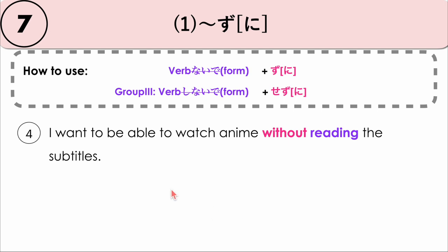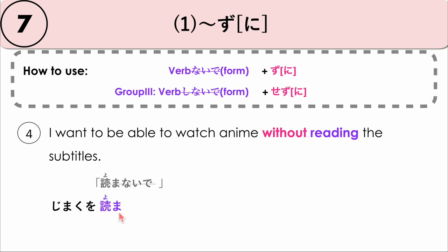Next example: I want to be able to watch anime without reading the subtitles. Jimaku wo — jimaku means subtitle. Our verb is yomanaide; yoma plus zu ni becomes yomazu ni, meaning 'without reading.' Anime wo mitai desu — I want to watch. Jimaku wo yomazu ni anime wo mitai desu.